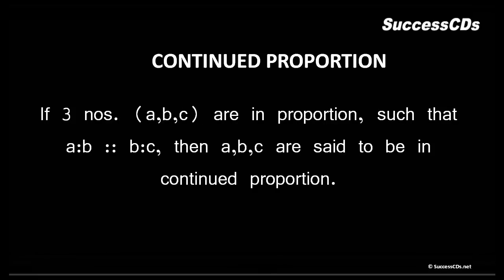Next we move forward to continued proportion. If 3 numbers a, b, c are in proportion such that a:b is proportional to b:c, then a, b, c are said to be in continued proportion.